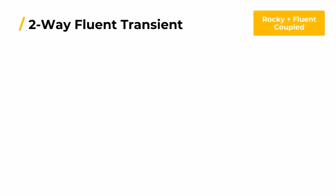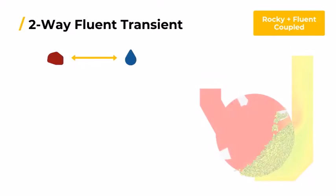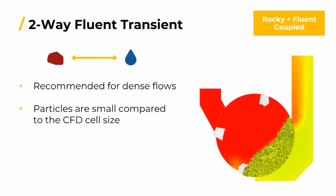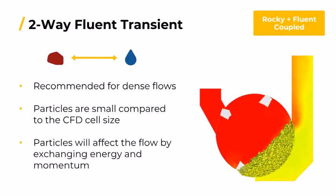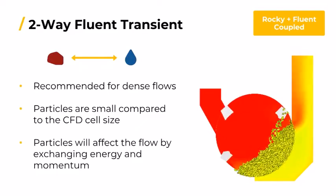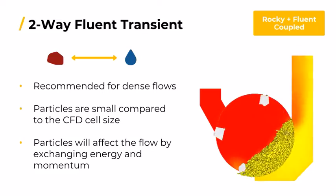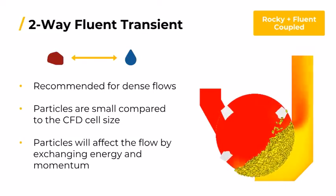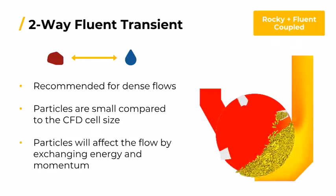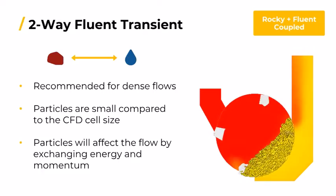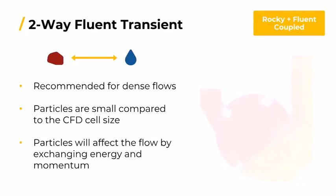There's also the two-way Fluent transient method, in which the particles are considered to affect the underlying fluid flow. This unresolved method is particularly useful for simulating complex phenomena where the particles are small compared to the cell size of the CFD mesh.